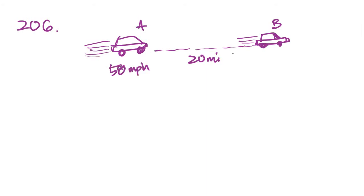206 says car A is 20 miles behind car B. So here's car A. And it is 20 miles. Car A is going there. And it is 20 miles behind car B. So this one's car B. And car A is traveling at a constant speed of 58 miles per hour. While car B is traveling at a constant speed of 50 miles per hour.